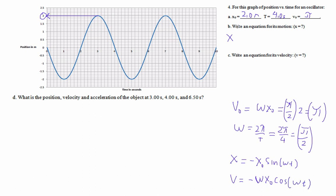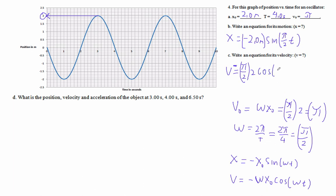Therefore v is going to be negative omega x₀ cosine omega t. So x equals negative 2 meters times sine of (π/2)t, and our omega is π/2. Then v is going to be the maximum velocity — omega times x₀ — so that's the opposite of pi times cosine of (π/2)t.